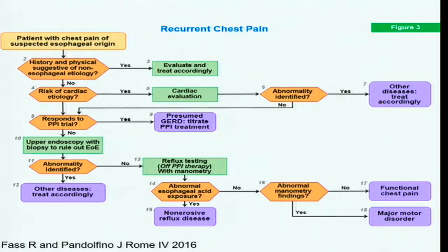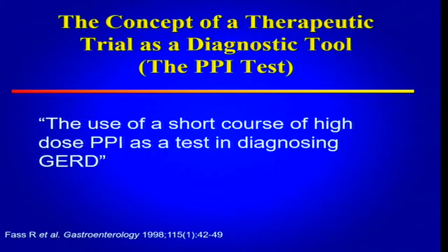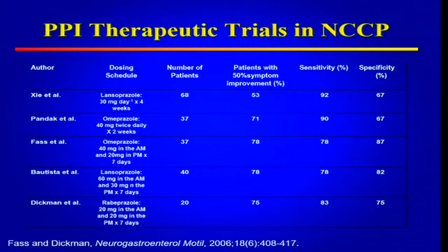If the PPI trial is negative, upper endoscopy with biopsies is performed. If that is negative, reflux testing is recommended — in the case of chest pain, it should be done off PPI treatment. If the patient does not demonstrate abnormal pH testing or a major esophageal motor disorder, the diagnosis is functional chest pain. The PPI test concept involves a short course of high-dose PPI — usually one to two weeks — as a diagnostic test for GERD, not as therapy. Studies have shown relatively high sensitivity and reasonable specificity in NCCP patients.